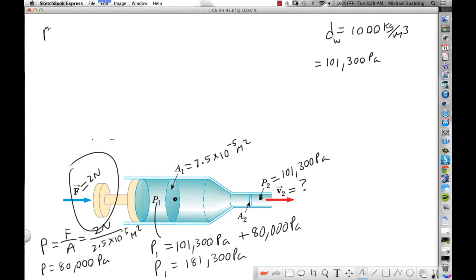So Bernoulli's equation is P1 plus 1 half dv1 squared plus dgh1 equals P2 plus 1 half dv2 squared plus dgh2. All right, is there any sort of vertical climb in this problem?